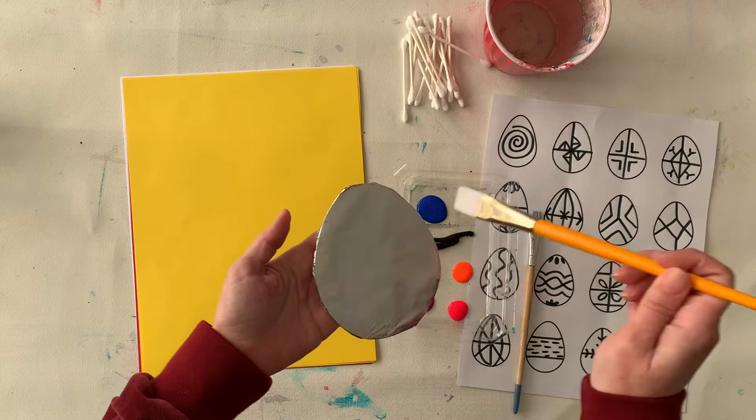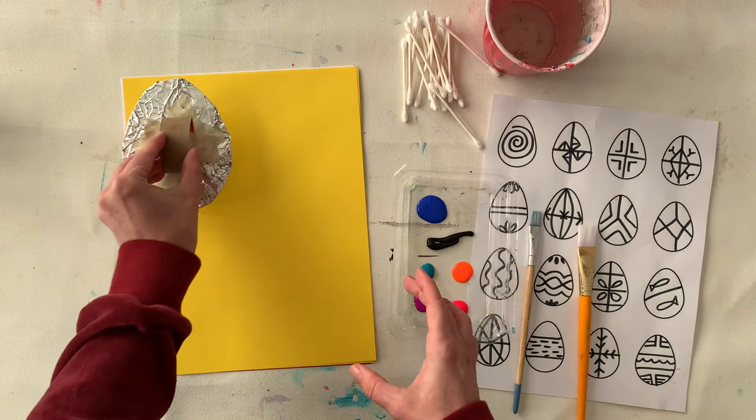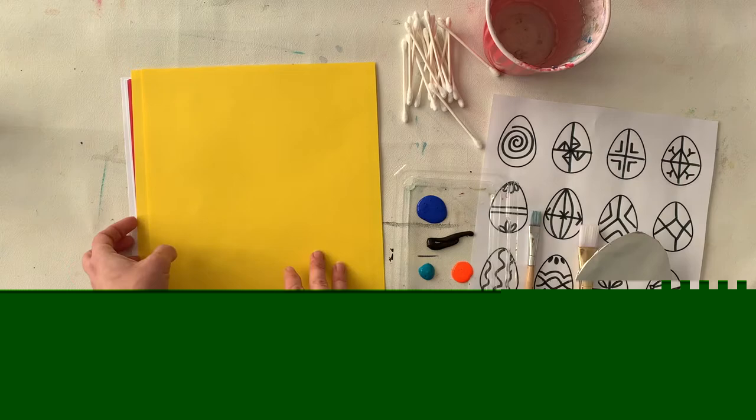So first things first, I'm going to use my paintbrush to spread some paint. Then I'm going to wipe off my design with my Q-tip and then I will press it onto my paper and have a look at what my design looks like. So I'm going to start with just white paper.